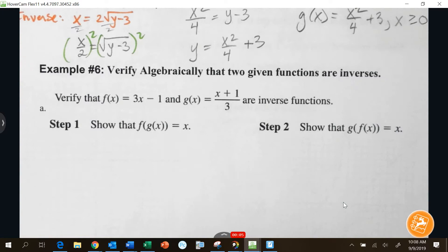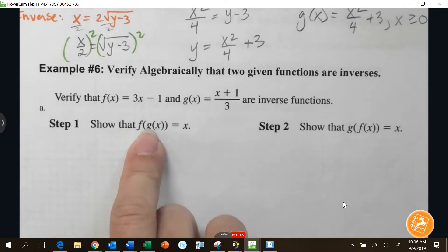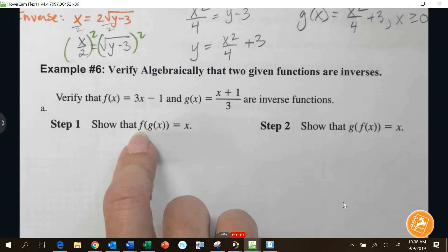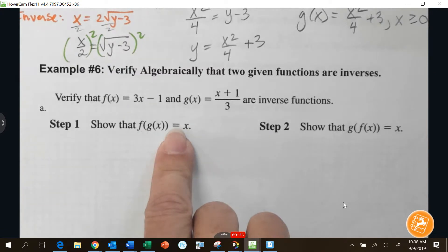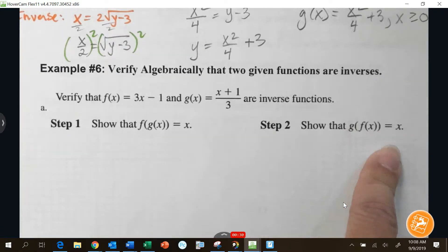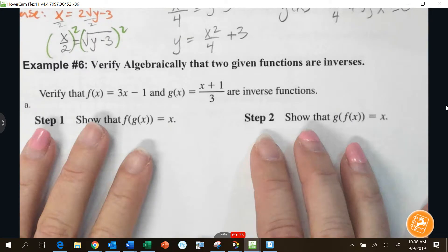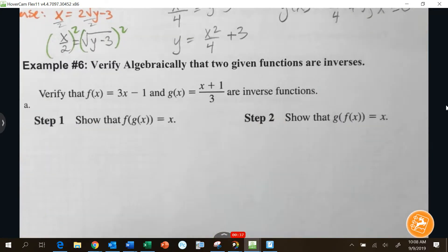Okay, so example 6 says we're going to verify algebraically that two given functions are inverses. If these are truly inverses, you will be able to show that you can put the g of x function inside of the f of x function, and it will simplify to x. You will also show that you can put the f of x function inside of the g of x function, and it will simplify to x. So these are composition functions. If they are inverses, they will completely undo each other, and we will get x when we are done.